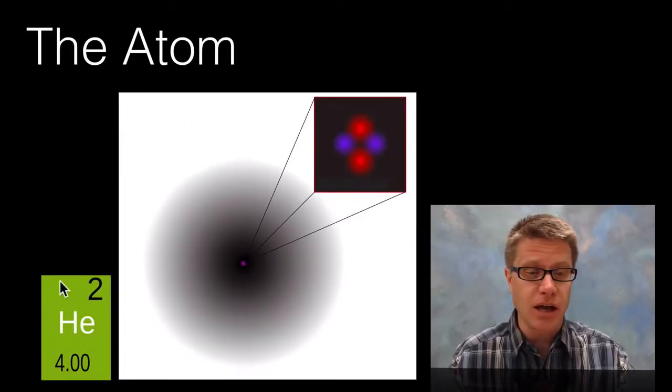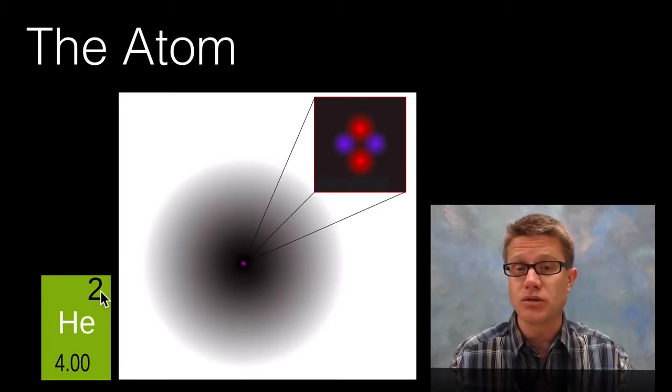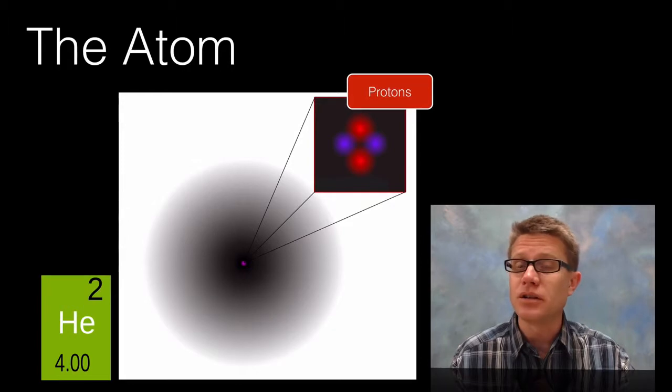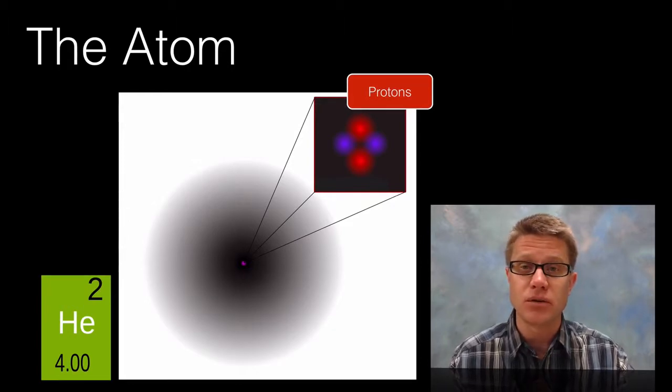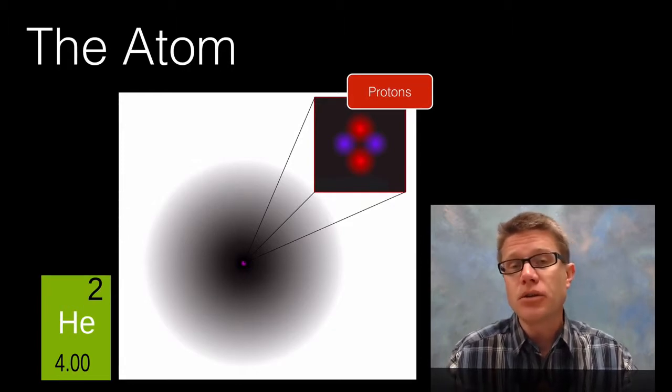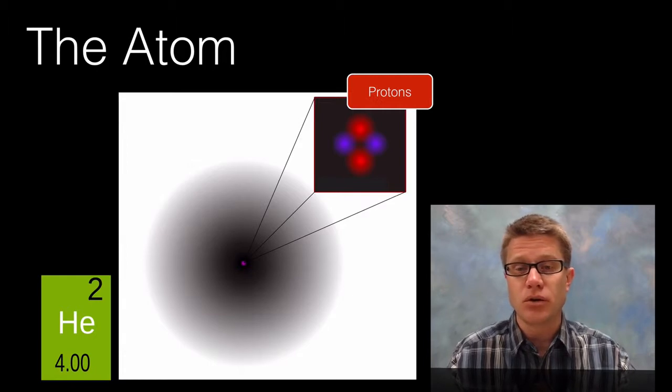And so if you look at any kind of atom on the periodic table, the atomic number tells us the number of protons we have. And so we are going to have these positive protons that are going to be found in the nucleus. We can figure out how many neutrons roughly we are going to have in an average atom by taking the mass number, subtracting the atomic number.